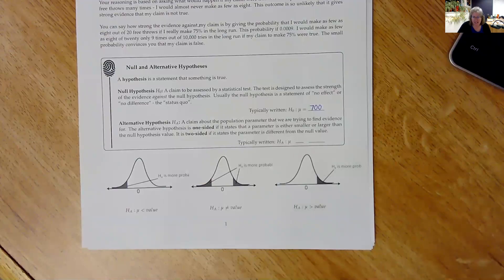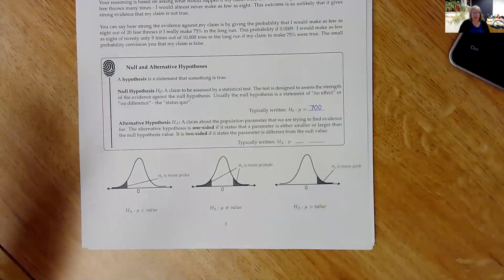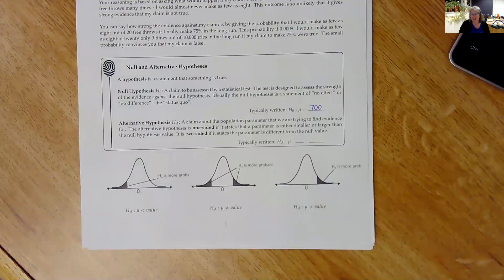The alternative hypothesis, though, is what we really think is going on. So do we think that it's less than what they claim? Do we think it's greater than? Or do we just think that it's different than what they claim? So in other words, if we're in second grade, that's the "liar, liar, pants on fire" argument. I don't think it's 700. I don't know if it's more or less, but I just don't think it's 700. It would be different than, or not equal to.